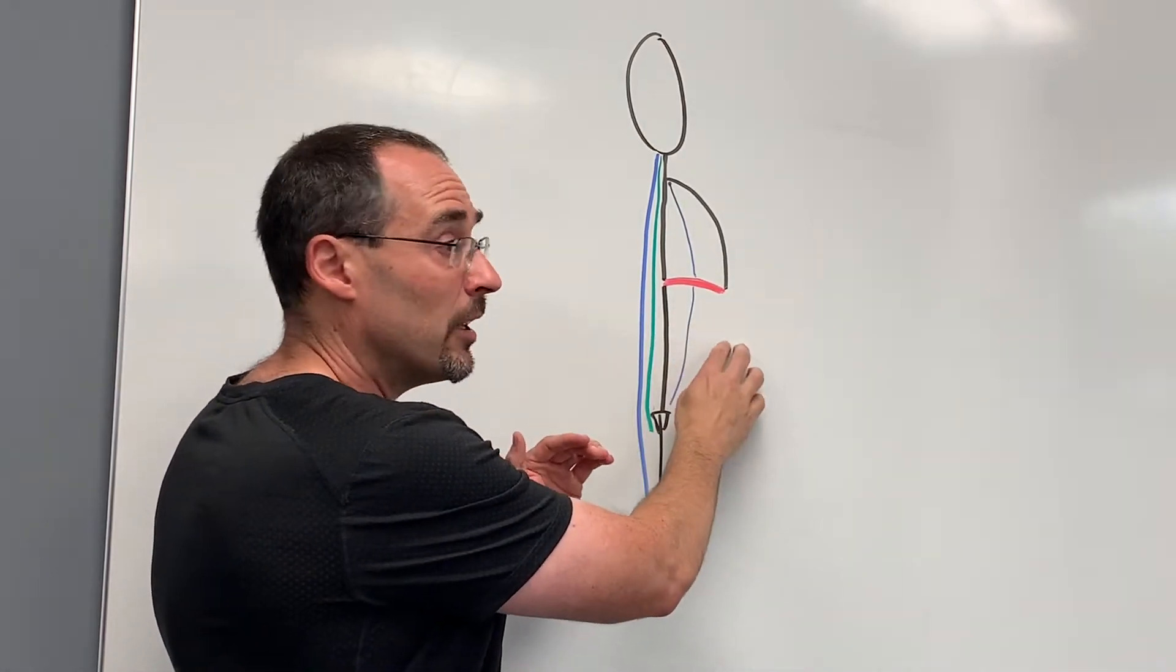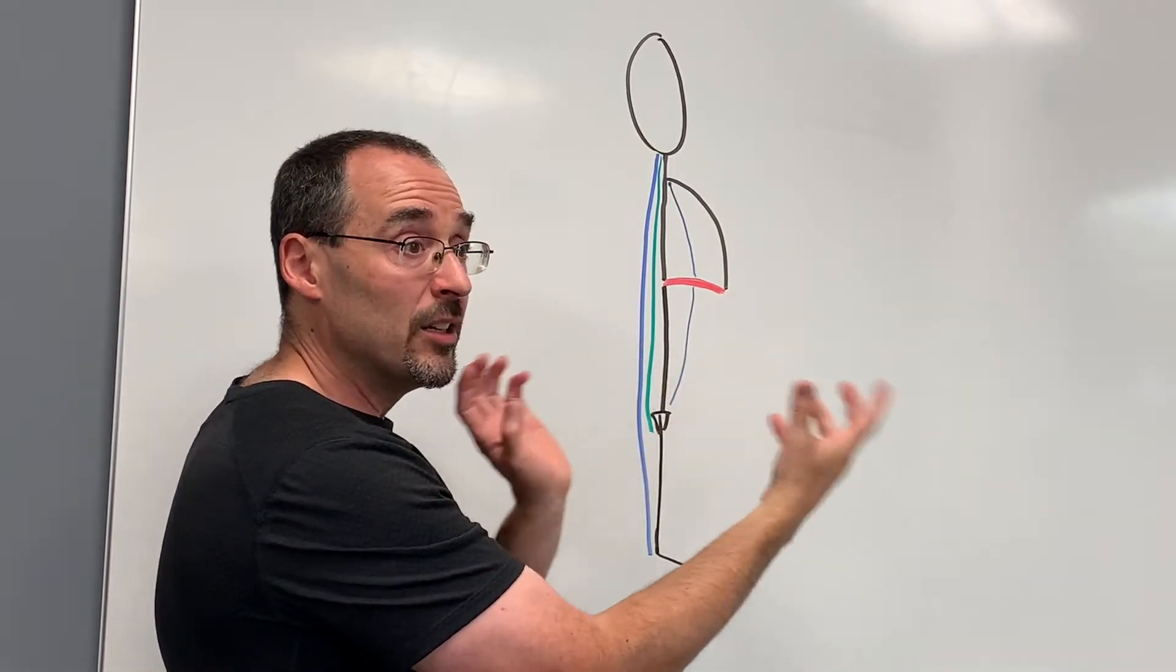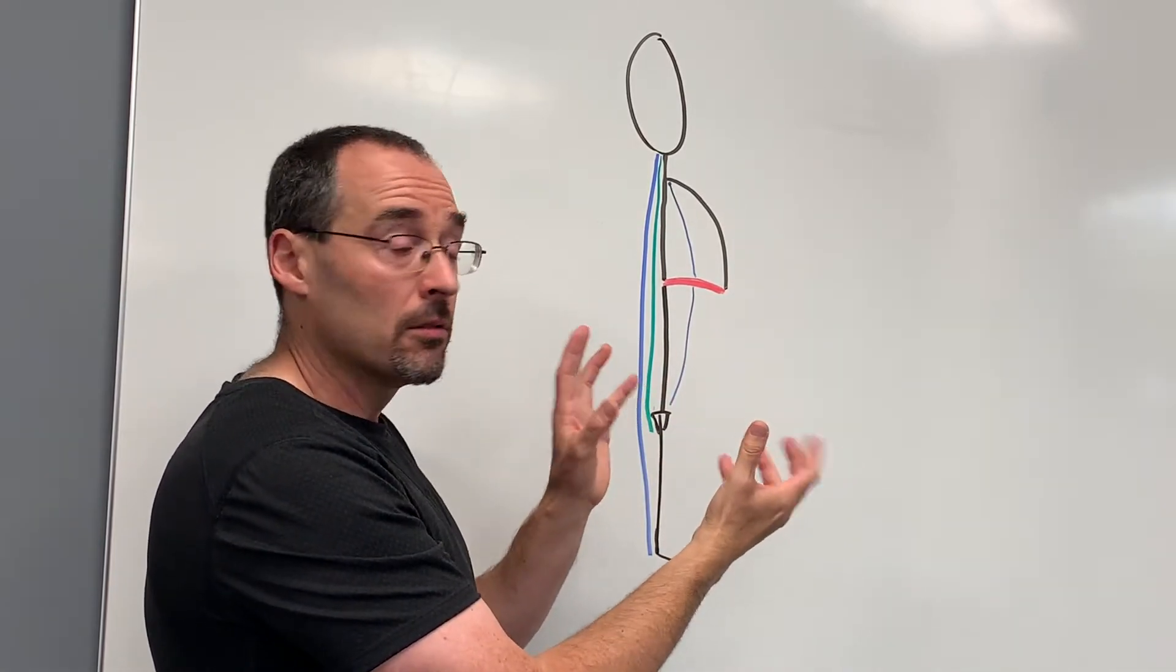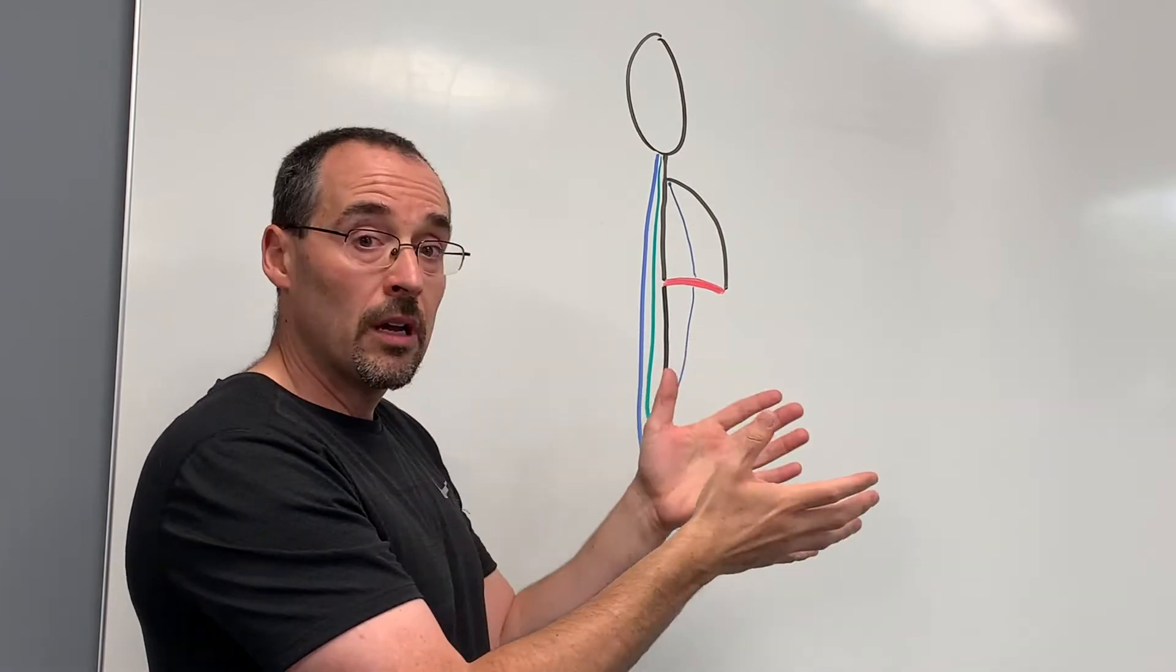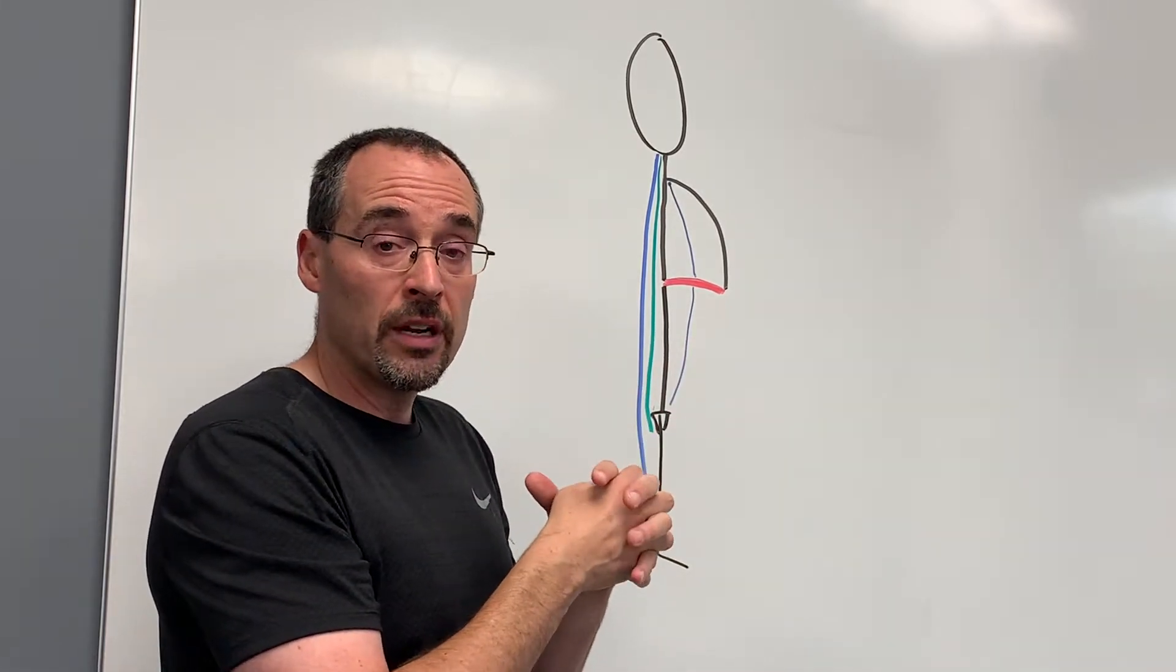So the anterior lines and posterior lines are constantly working together in order to allow us to do most of our everyday movements.